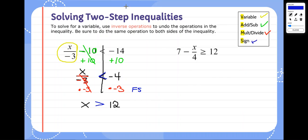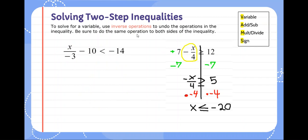Your turn — try the next problem. You should have gotten x is less than or equal to negative 20. Circle your variable out to the sign, then get rid of the plus 7 by subtracting 7 on both sides. Bring down minus x divided by 4, treating it as divided by negative 4, and cancel it out by multiplying by negative 4 on both sides. That gets rid of the negative and the 4 at the same time, leaving x. 5 times negative 4 is negative 20. Flip the sign because you multiplied by a negative. X is less than or equal to negative 20.